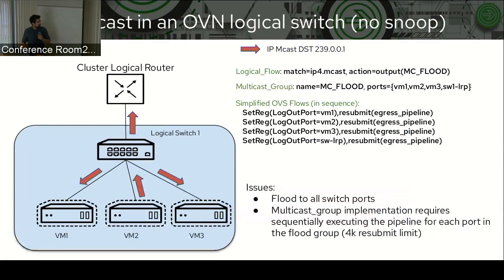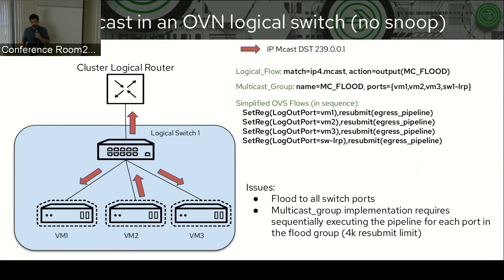Let's zoom in a bit on one of the nodes in OVN. Assuming that we don't enable IGMP snooping, whenever there's multicast traffic sent by one of the VMs, this will match a logical flow that sets as output port a multicast group called mcflood, which translates to a sequence of OVS flows that sets the logical output port and then runs the egress pipelines sequentially. There are a few issues: first, we flood to all the switch ports, even those not interested in the traffic. And running the pipeline sequentially means many resubmits — there's a 4K resubmit limit in OVS.